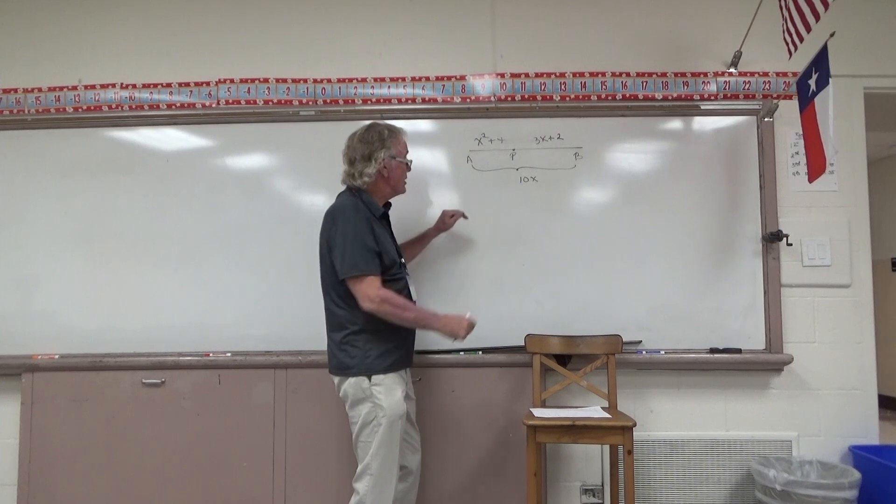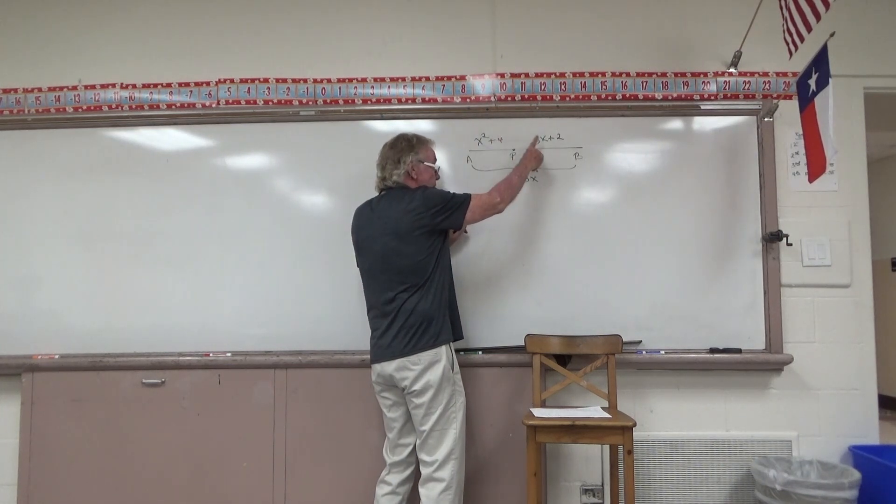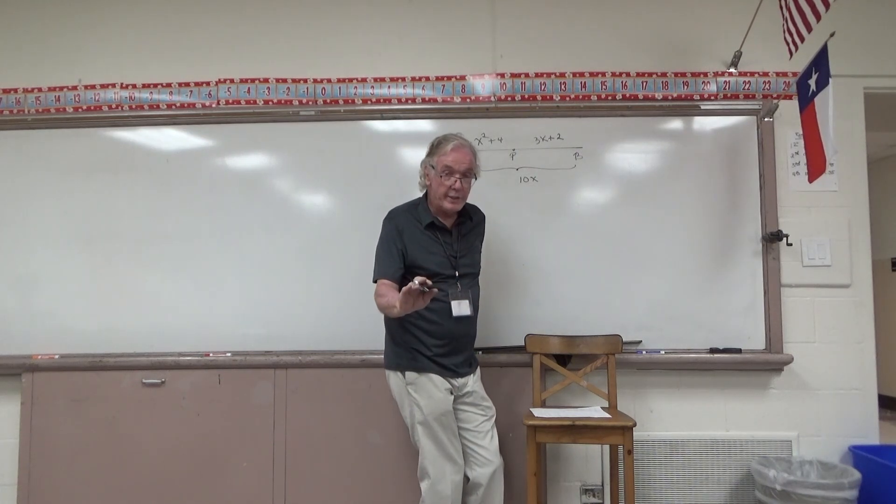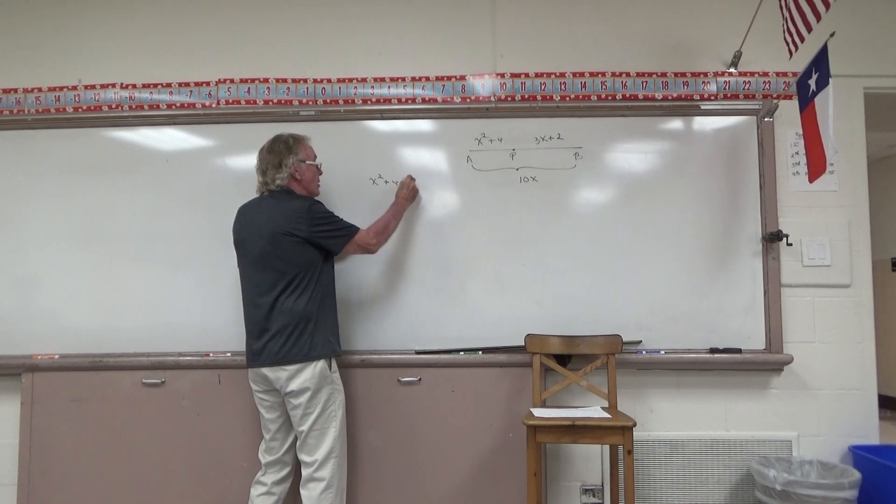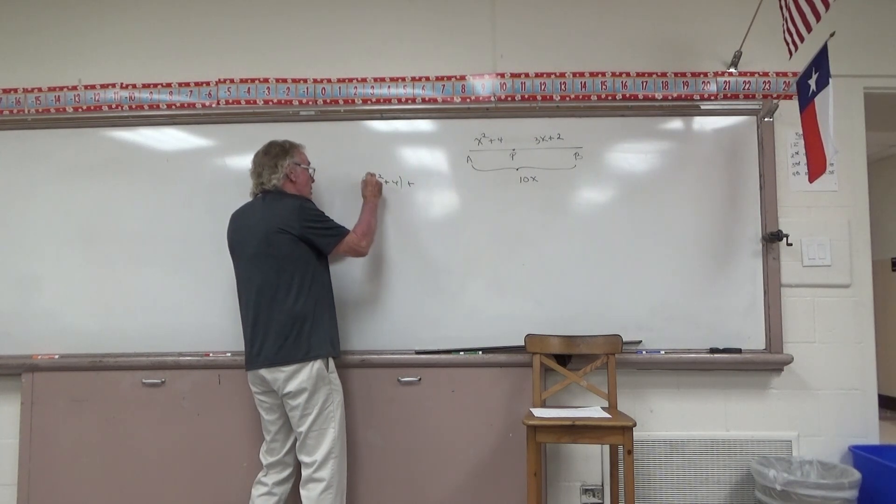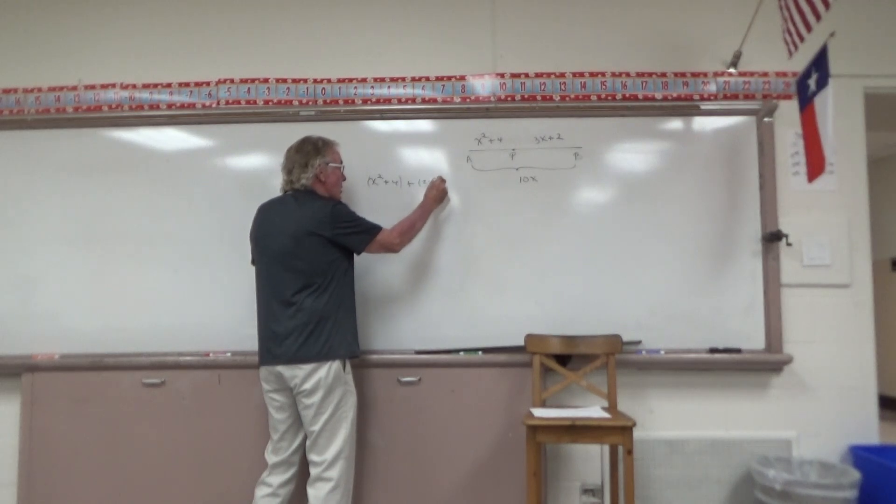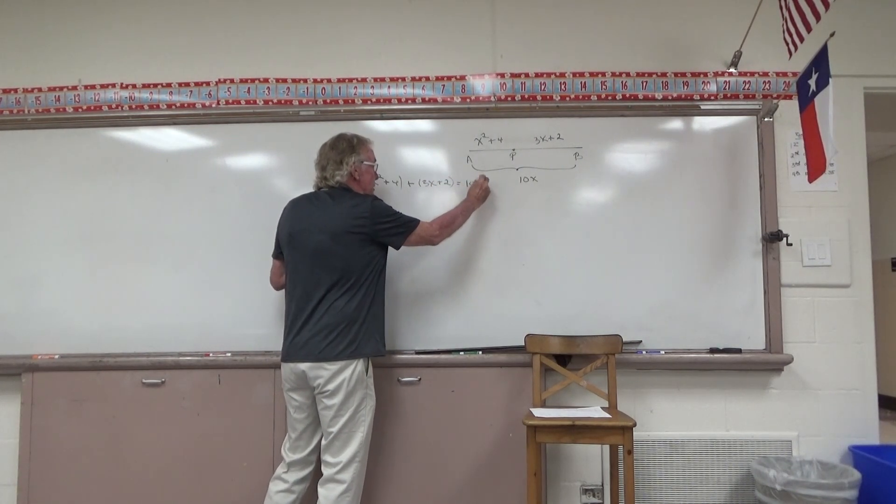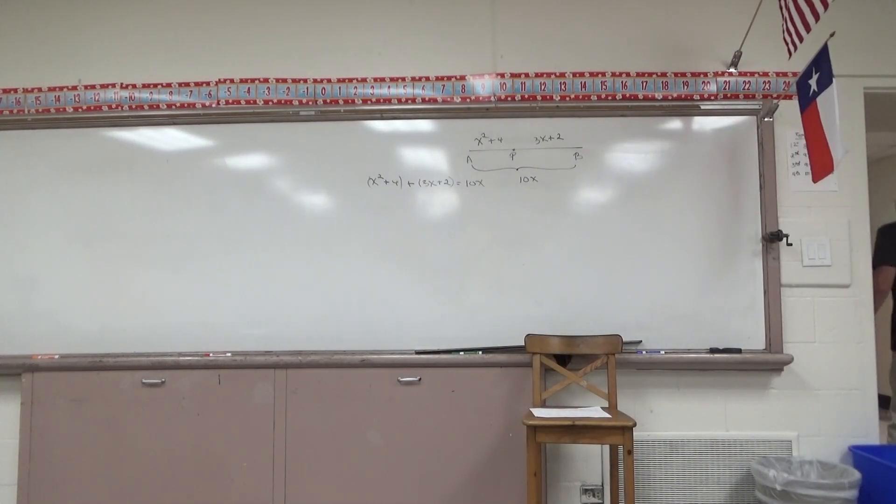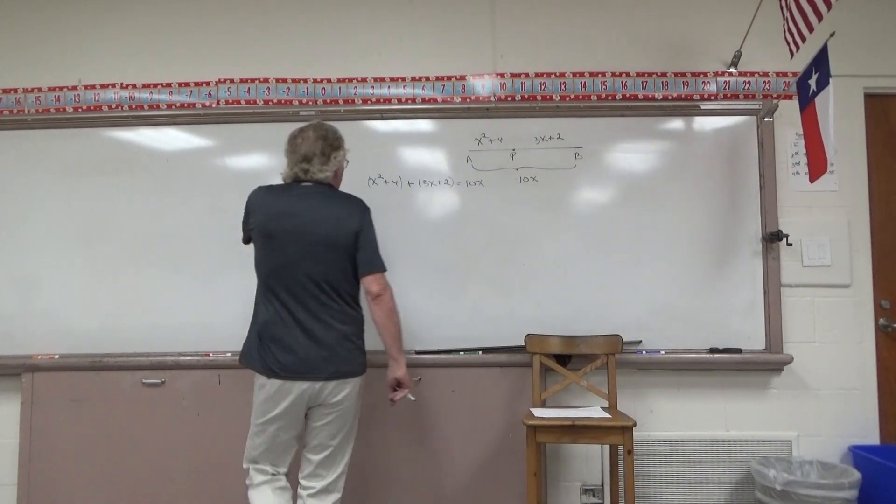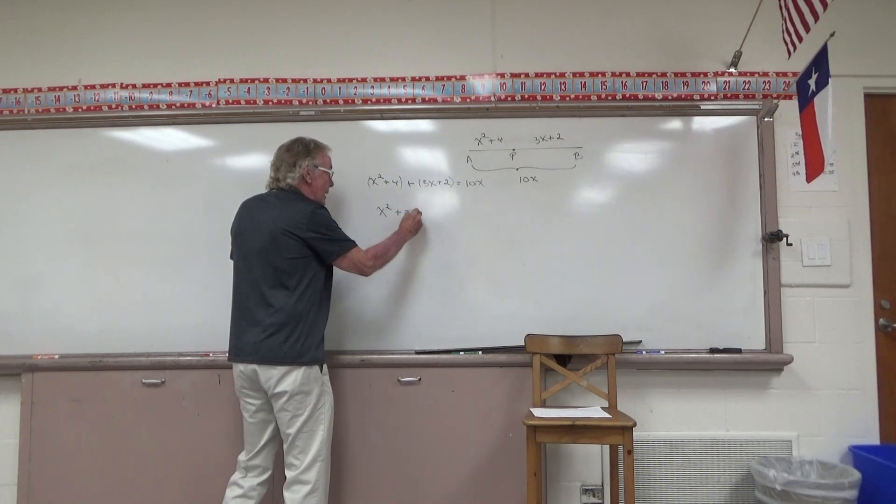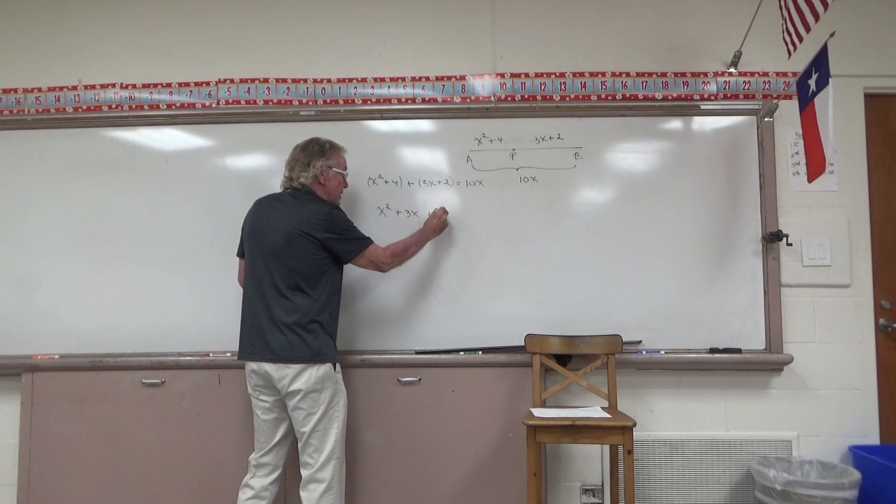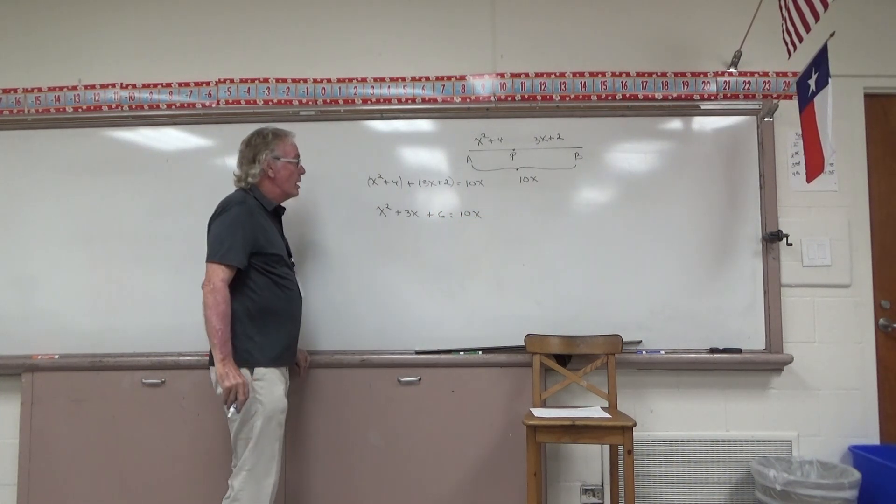It is clear to most of us, I'm sure, that this small length, X squared plus 4, plus this small length, 3X plus 2, must equal the full length, 10X. Let's write the equation and see what we should do to solve it. So it would look like this, X squared plus 4 plus 3X plus 2 must equal 10X. On the left-hand member, I should collect like terms. That would just be X squared. The 3X stays. This positive 4 and this positive 2 yielding a positive 6, equals 10X.